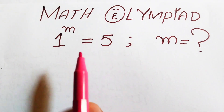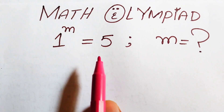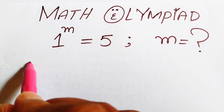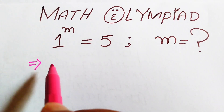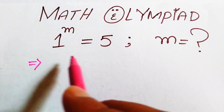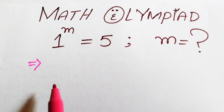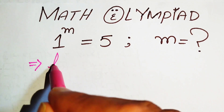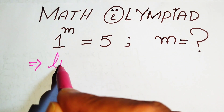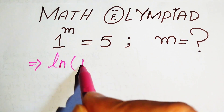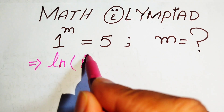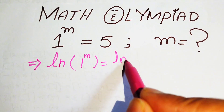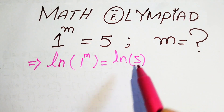First we check if this equation has real roots or not. We will take the log on both sides of this equation, so it will be written as log of 1 to the power of m equals log of 5.